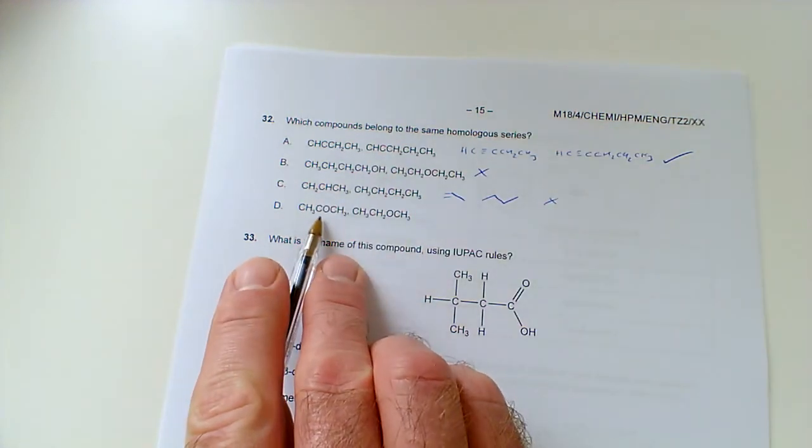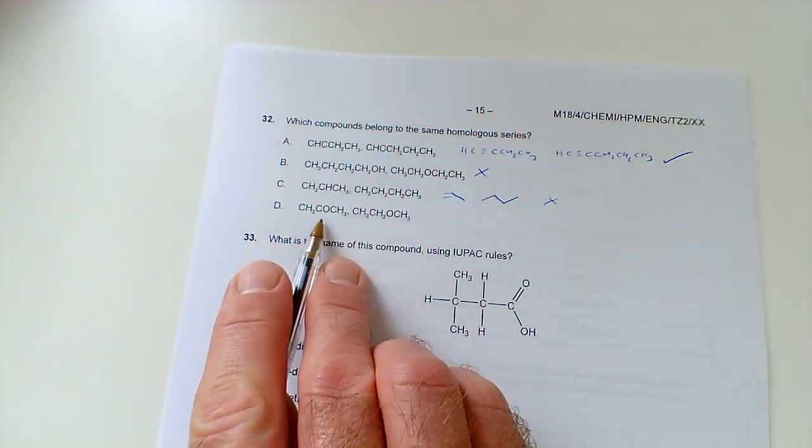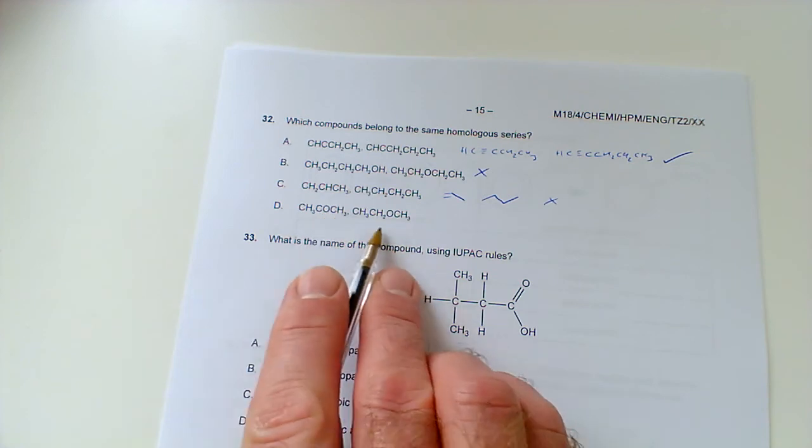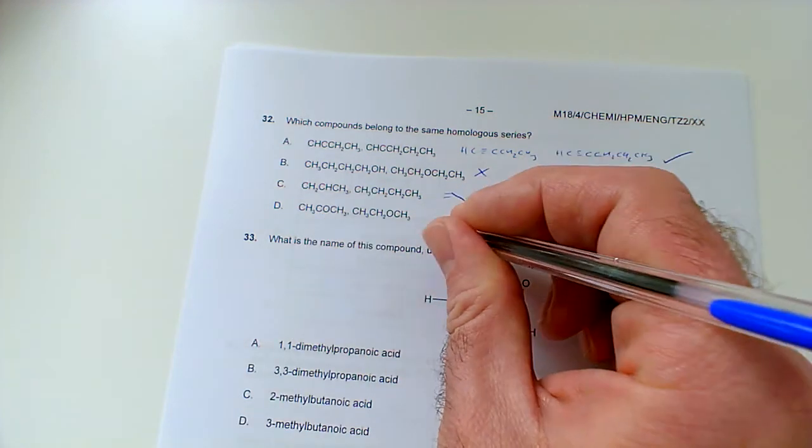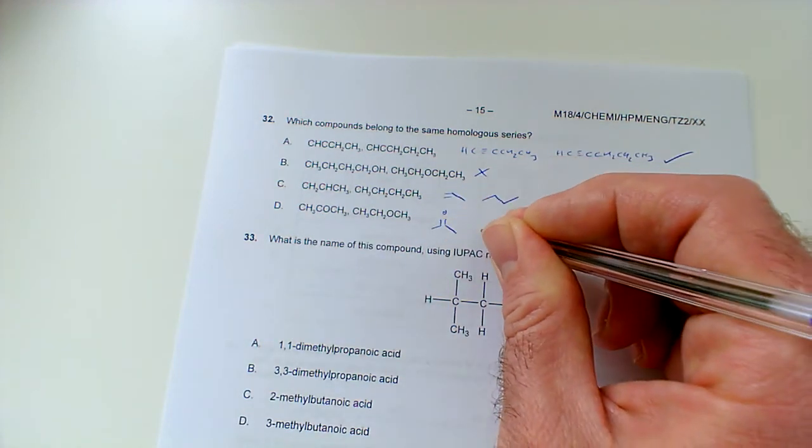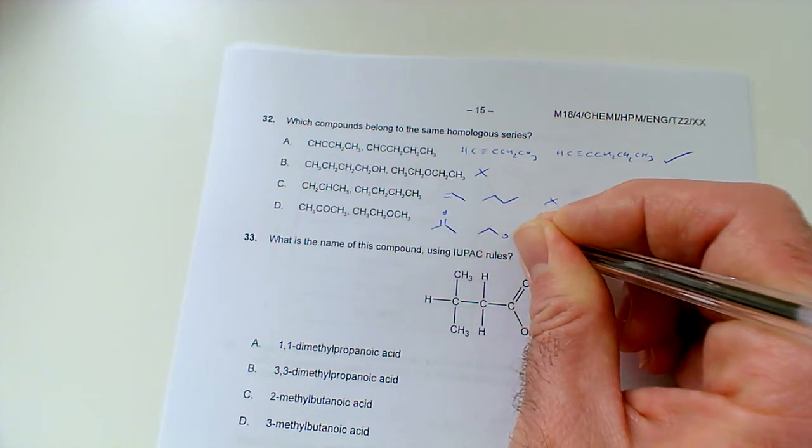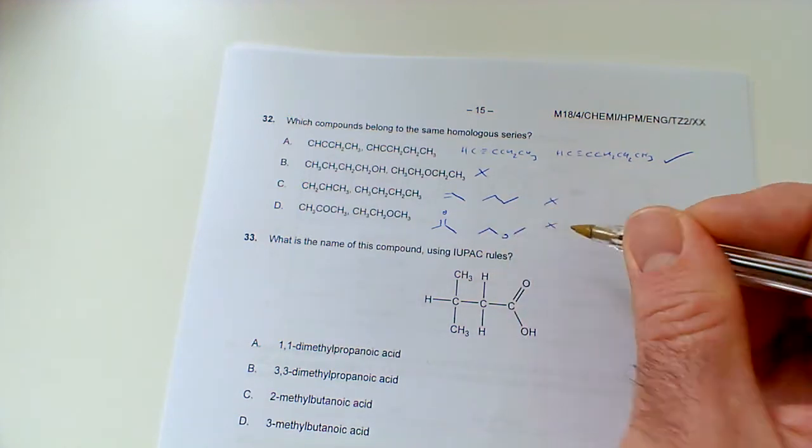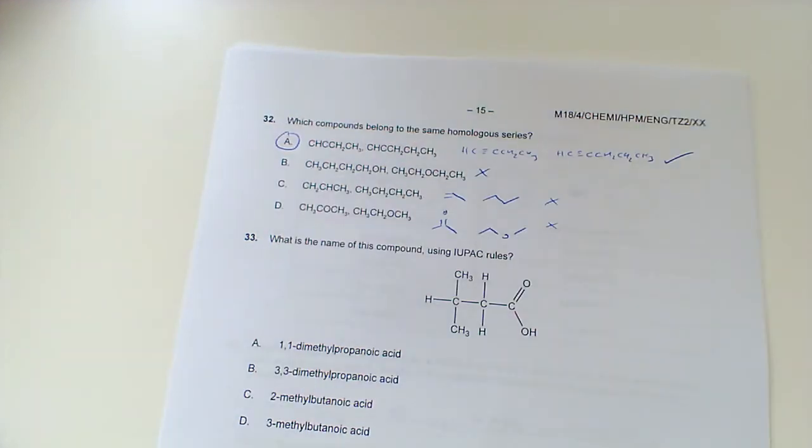And then this next one, well, that looks like a ketone. So, that is propanone, and that is an ether. So, we've basically got a ketone versus an ether. So, it's not that one. So, it's the first one, with its two alkynes.